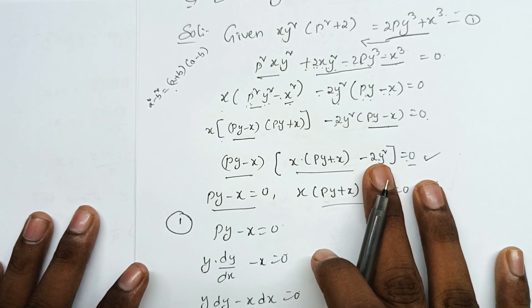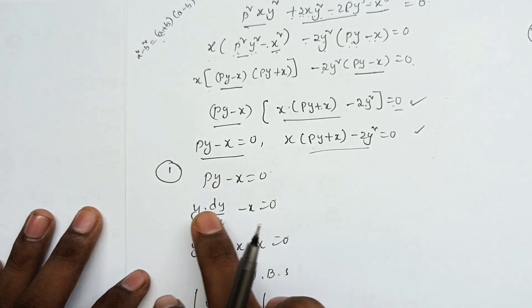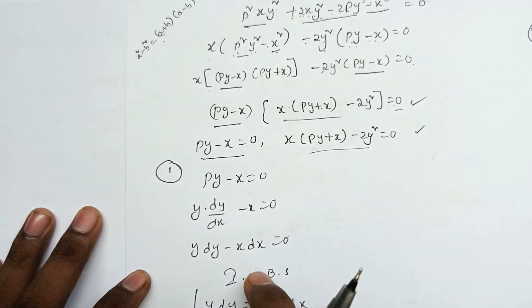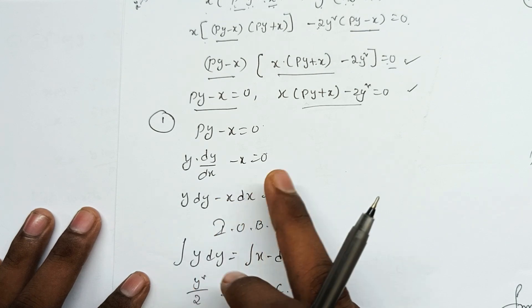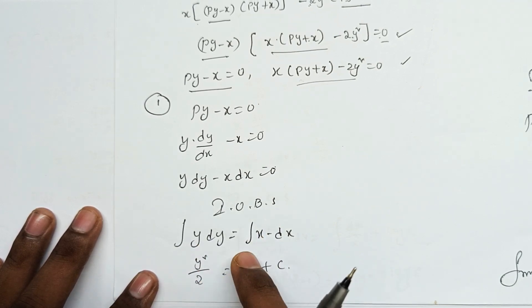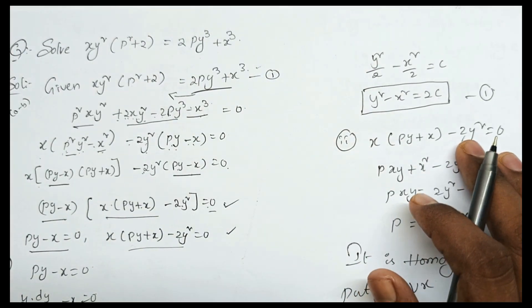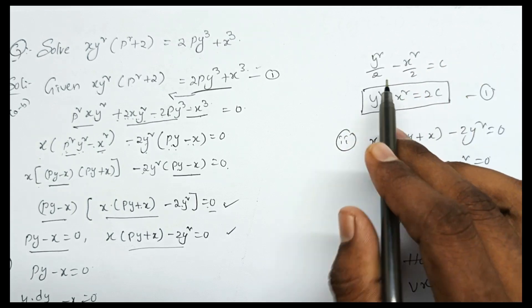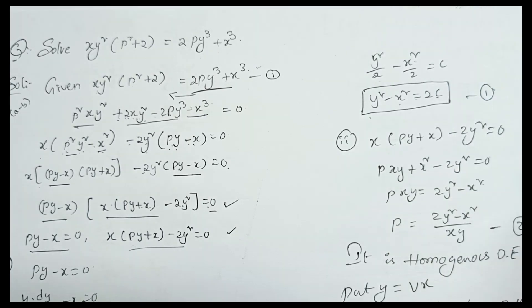Taking py minus x common: x into py plus x minus 2y squared is equal to 0. From the first factor: py minus x equals 0, so py equals x, meaning p times y equals x, so y dy minus x dx equals 0. Integrating both sides: y squared by 2 minus x squared by 2 equals c. Therefore y squared minus x squared equals 2c. This is Equation 1.